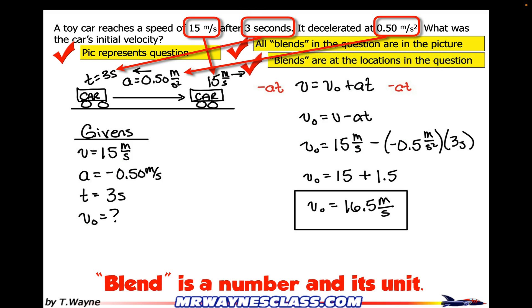Next, I want to make sure that my blends are at the locations in the question. The question says a toy car reaches a speed of 15 meters per second. So that's the final velocity. So I put it at the end of our story on the right-hand side when the car reaches the end. You can see I have an arrow showing where the motion of the car so I can tell where the beginning and the end of my picture story is located.